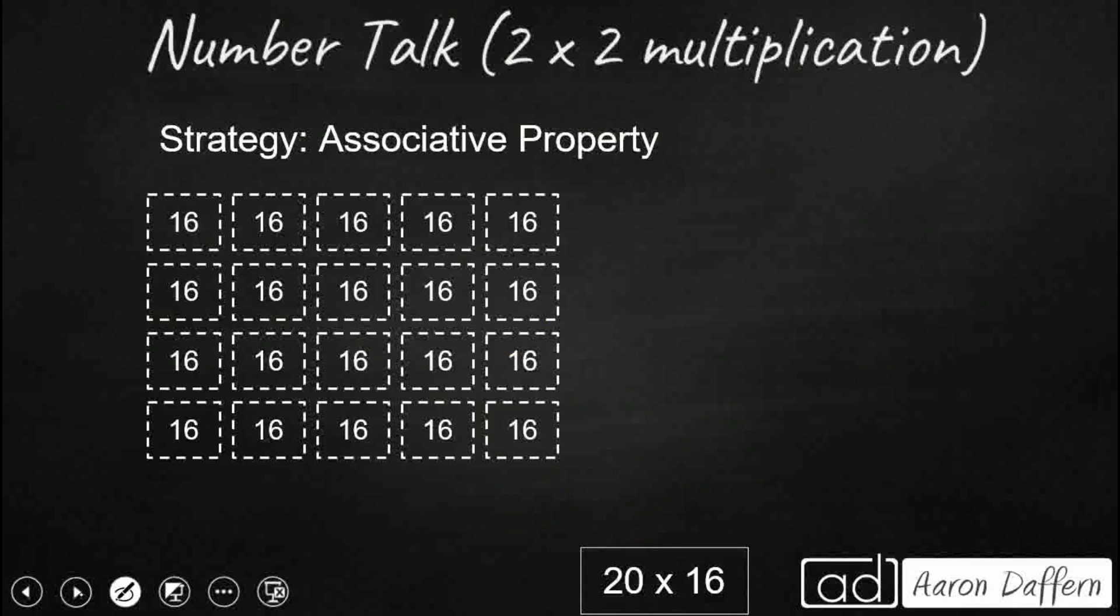We can also look at the associative property. So this is our grouping property. And what this does is this lets us take our factors, and if we can get it to three or more factors, we can kind of rearrange the groups. So I'm going to take my 20, and I'm going to reimagine that as 4 times 5. So there's my 4 times 5, and I'm going to multiply that by 16. So I've got three factors now, and what this lets me do is this lets me rearrange these groups. So instead of 4 groups of 5,